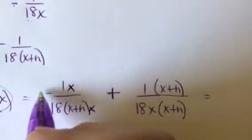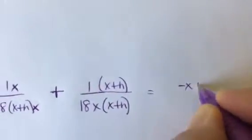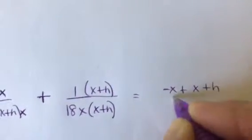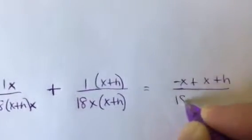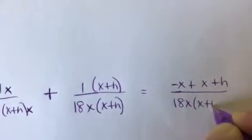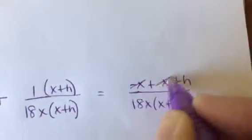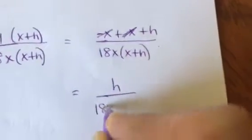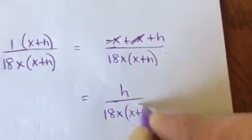Okay, so here's what I have. I have a negative x, and then 1 times x is x, 1 times h is h, all over 18x times x plus h. Okay, notice my x's cancel. So I am left with h over 18x times x plus h. Now, we haven't found the difference quotient yet. All we did was do the numerator.